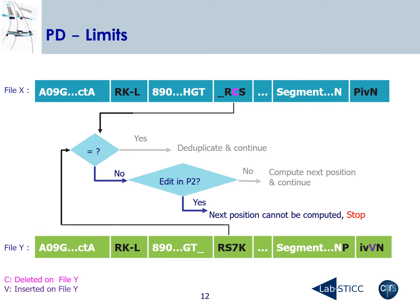However, this algorithm has limits. When an error appears on a pivot — as shown here with the deletion of C on file Y — the algorithm cannot calculate the position of the next pivot and stops its execution. This can lead to a decrease in the final deduplication ratio.